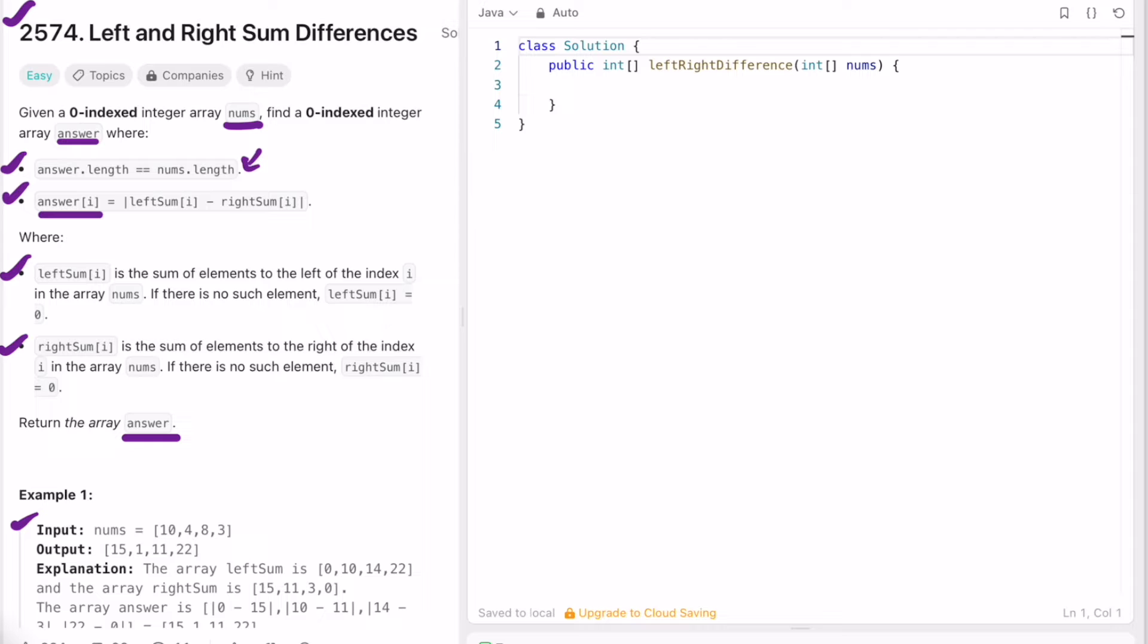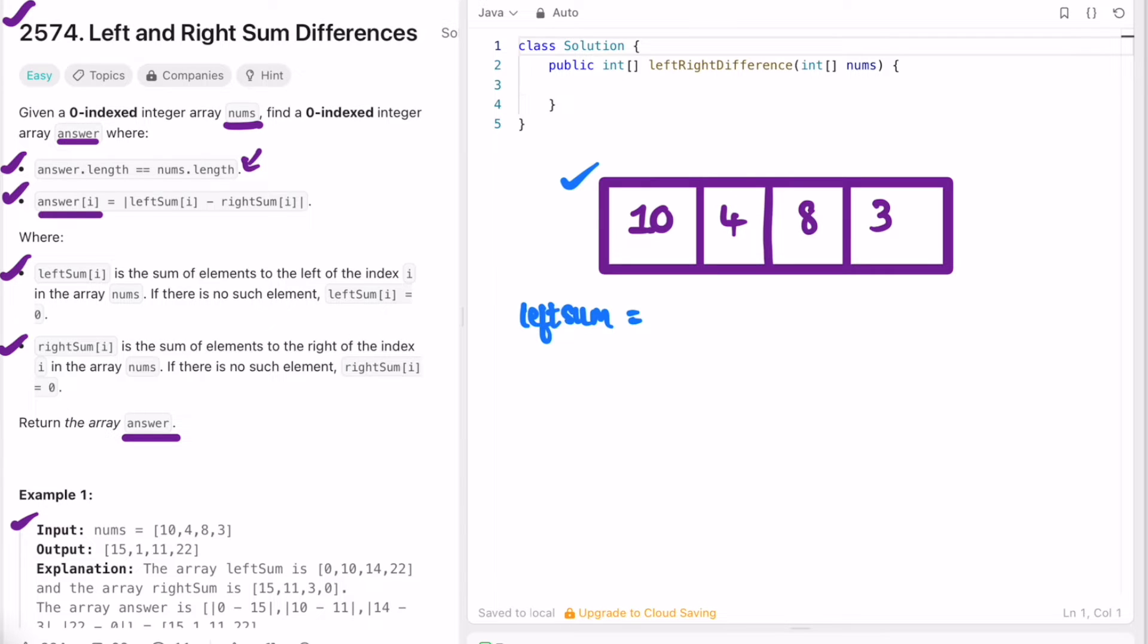Now let's take a look at example one and see how we can form the output. So we have the input array. Now let's find the left sum for all the elements. Left of this is nothing, so we start with zero. Left of this is 10. Left of this is 10 plus 4, which is 14. And left of this is 22.